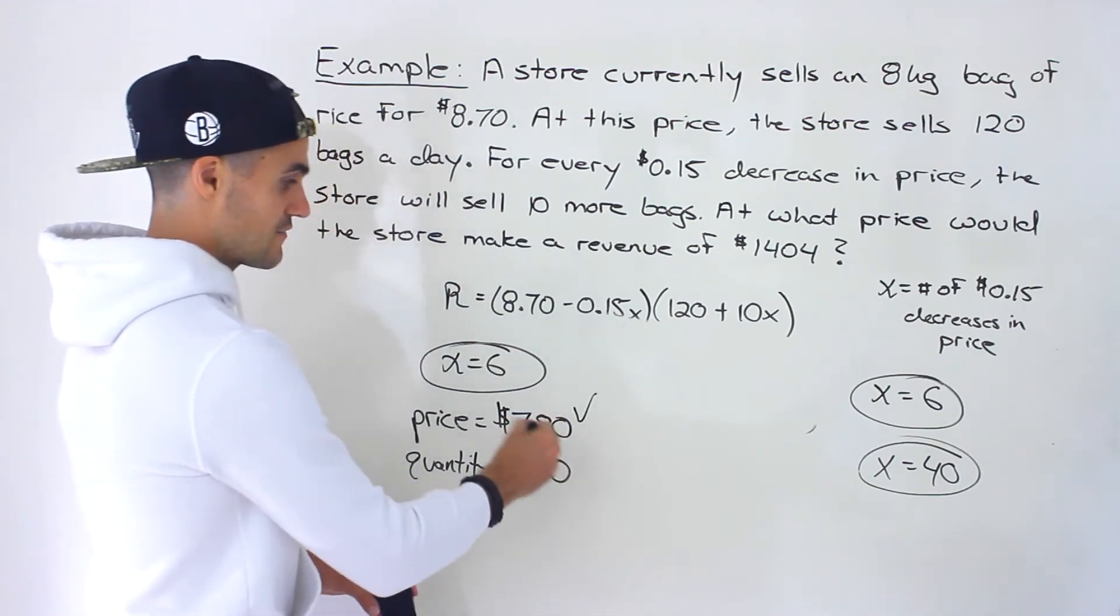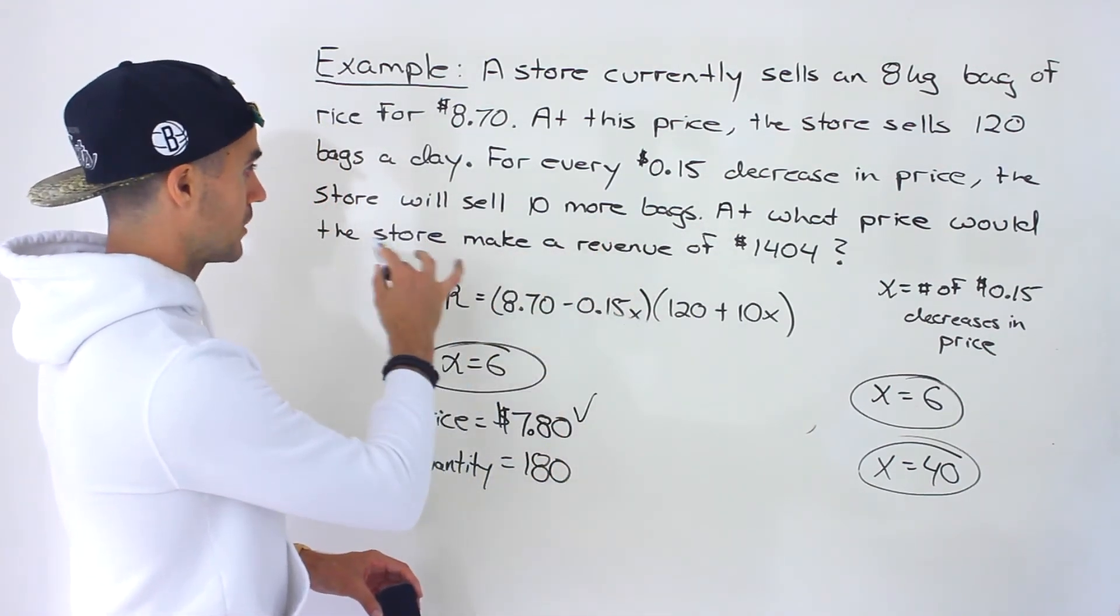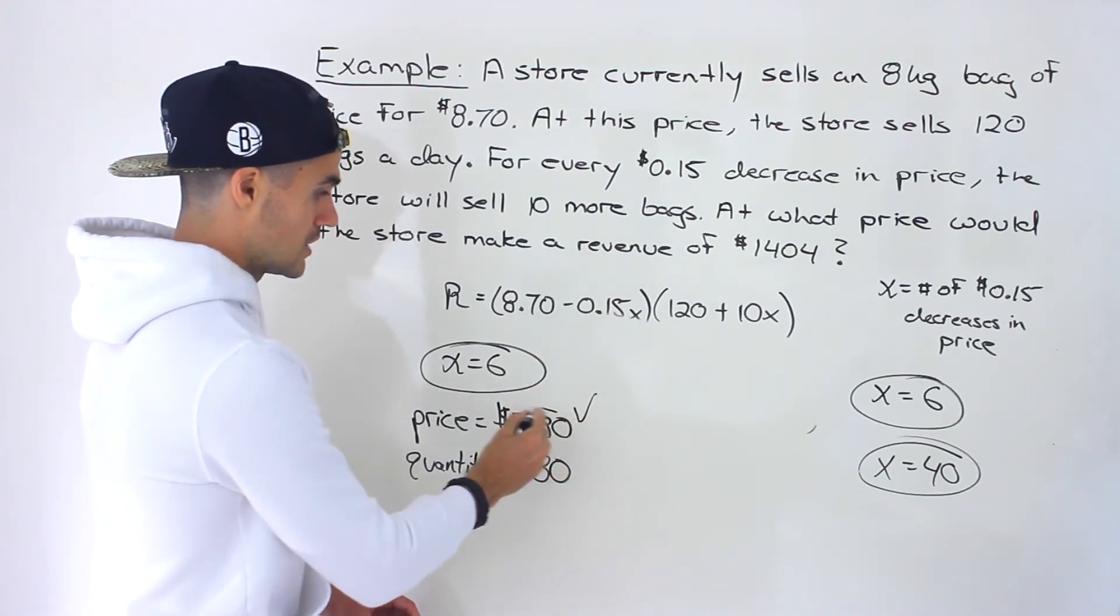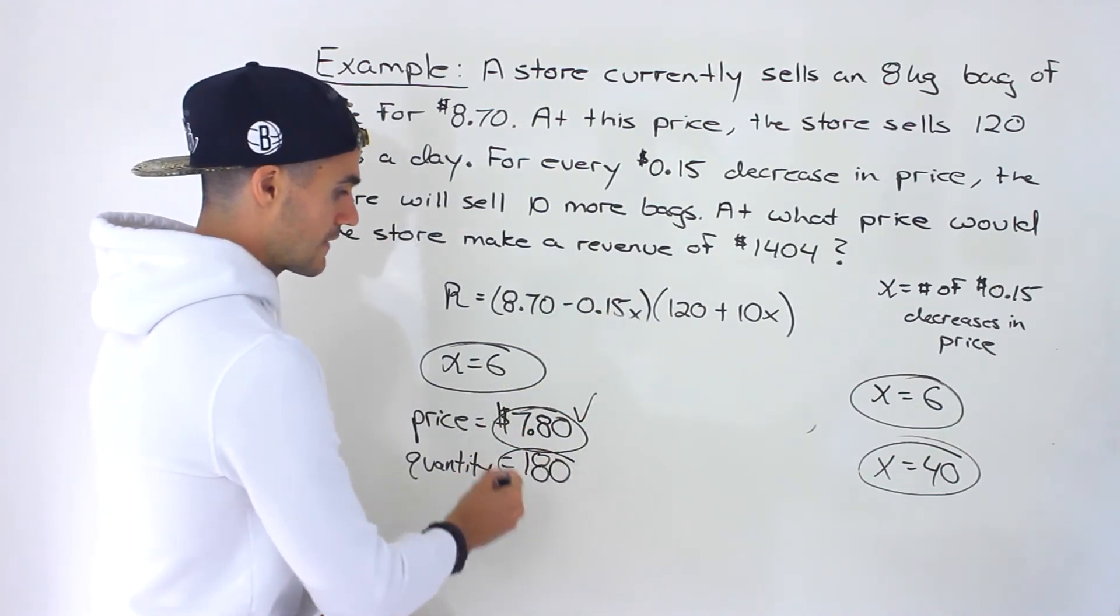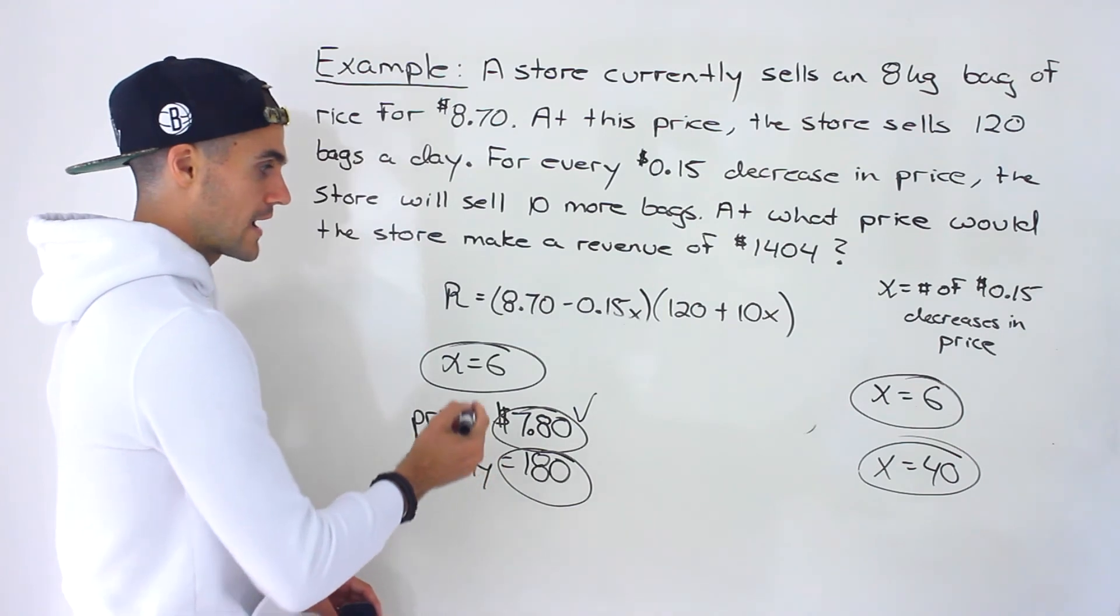So this is one case over here. So we have a price of 7.80. That's what they're asking for. What price would the store make a revenue of that much? At a price of 7.80. And then the quantity sold would be 180 bags.